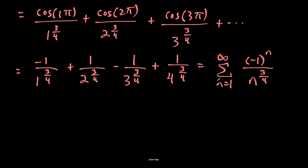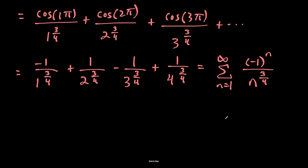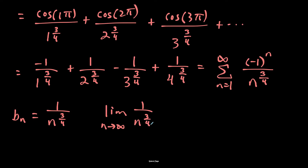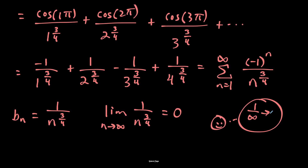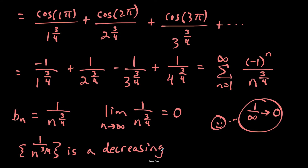So our original series equals the rewritten series. We define b sub n as one over n to the three-fourths. The limit as n goes to infinity of one over n to the three-fourths goes to zero, because one over infinity to the three-fourths heads toward infinity, and one divided by infinity goes to zero. So that condition is met. Also, one over n to the three-fourths is a decreasing sequence.